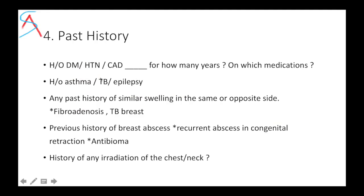Past history of diabetes, hypertension, and coronary artery disease is important — whether the patient is taking treatment or not — as this is required when the patient goes for treatment. Ask about any past history of similar swelling in the past or in the opposite breast, as recurrence of TB breast or fibroadenosis is possible. Any previous history of breast abscess treated with antibiotics without incision and drainage can now present as antibioma.